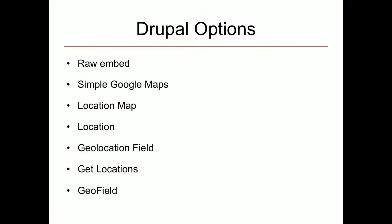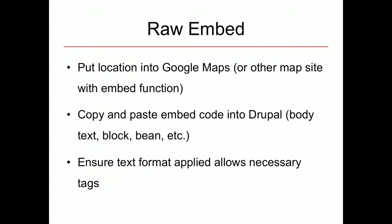In terms of Drupal options, raw embed is something we'll briefly touch on — it's not really recommended but good to know as an option for weird edge cases. You can go into Google Maps, bring up the address, get the embed code, and paste it into your node or block in Drupal. Just make sure the text format filter allows the iframe tag, otherwise it'll be filtered out. But it's probably not something I'd recommend.